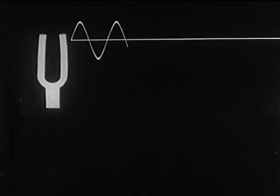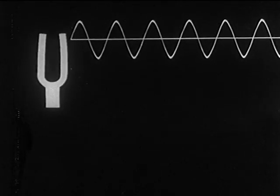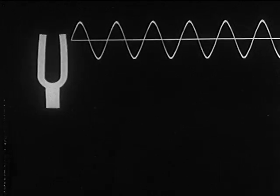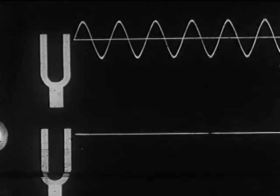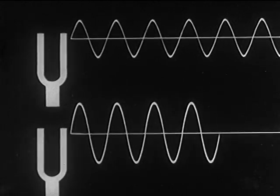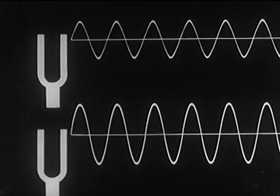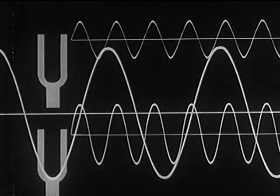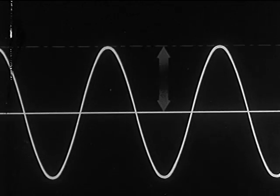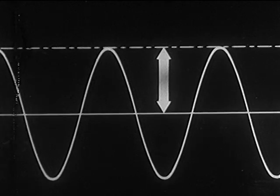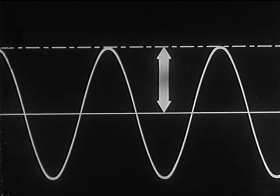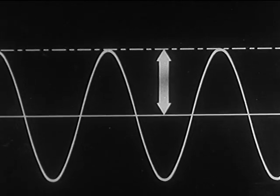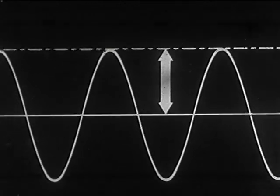We begin with loudness. Every sound sets up a disturbance in the transmitting medium. The larger the disturbance or displacement of the individual particles, the greater is the height of its graph above the neutral line. This displacement above the neutral line is called amplitude, and it is amplitude that determines loudness. As the amplitude increases, loudness increases.